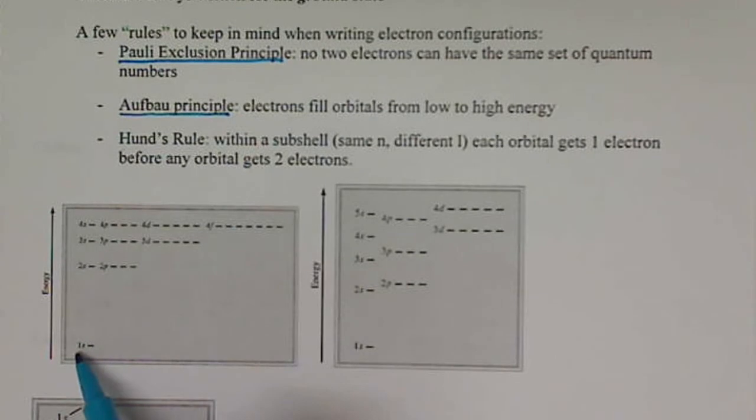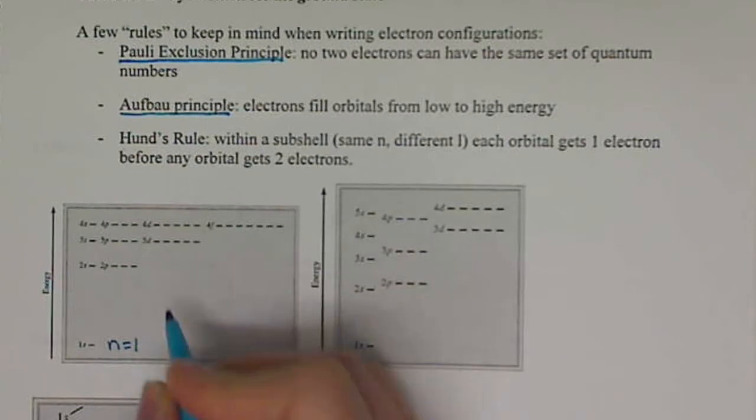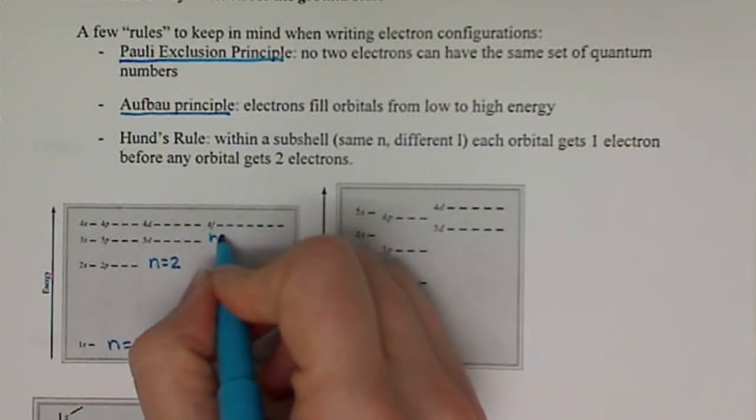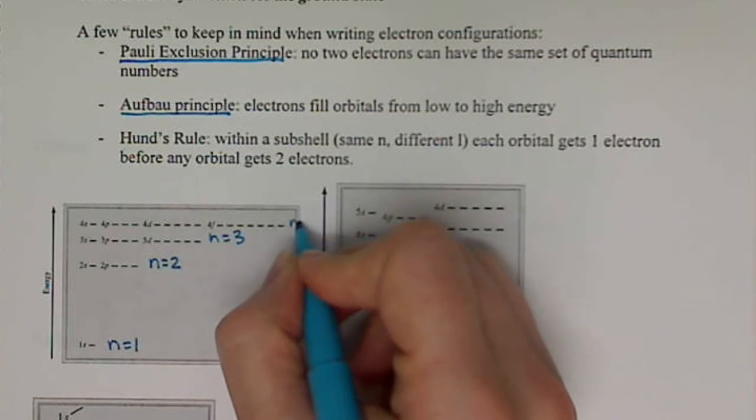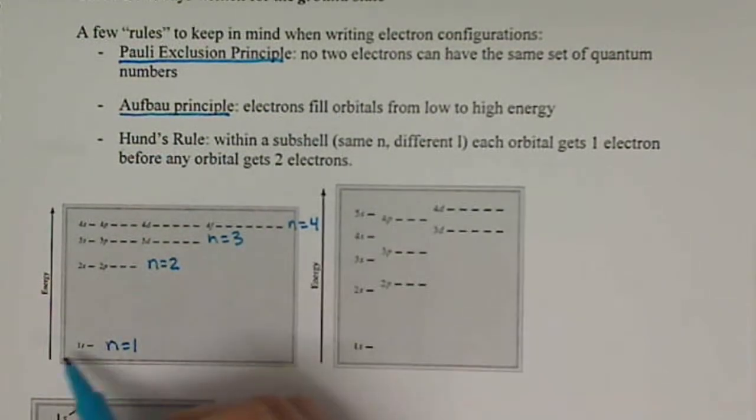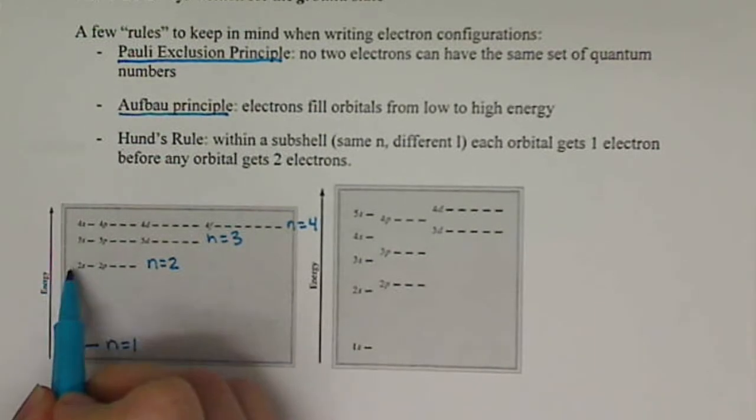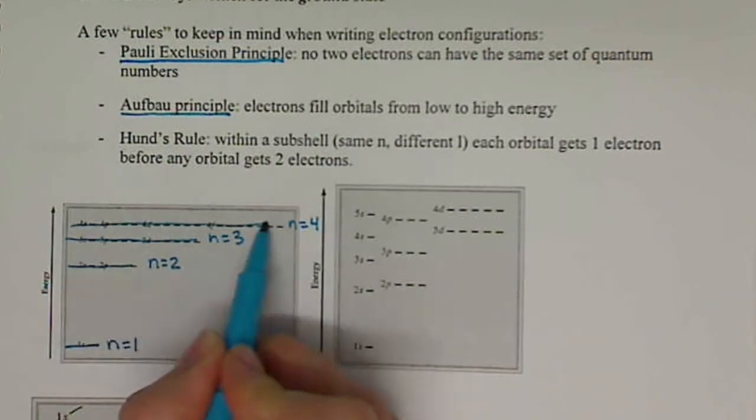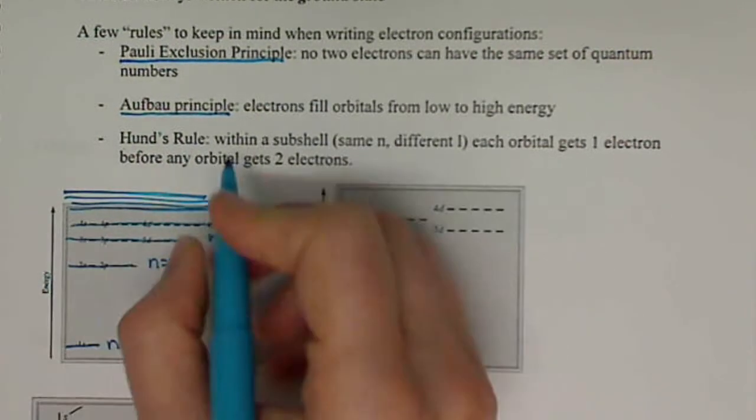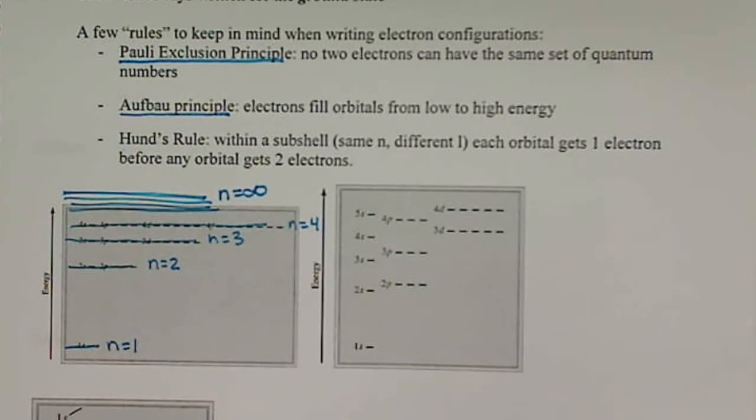So we have the 1s level here, this would be the n equals 1 level. We have the n equals 2 level, the n equals 3 level, and the n equals 4. We've seen something like this, not split up into orbitals, but we've seen something before where we saw levels just kind of written as lines, right? And we went n equals infinity earlier in this chapter.